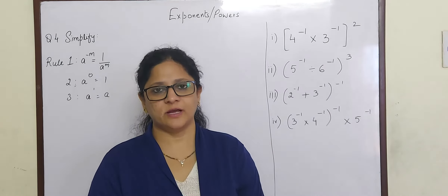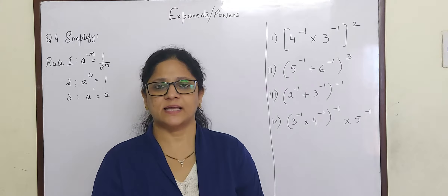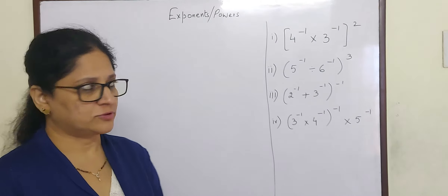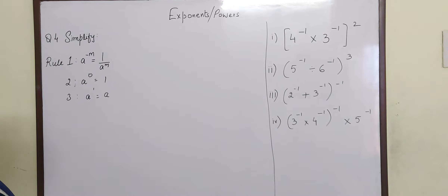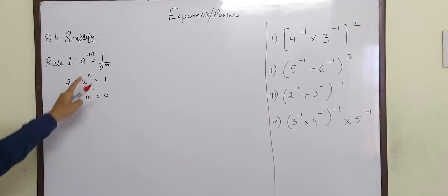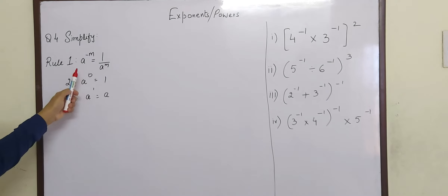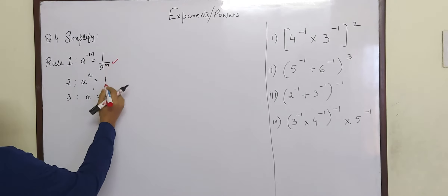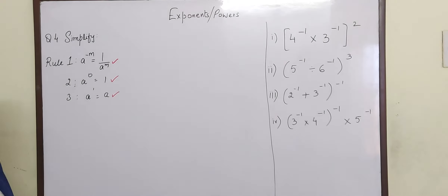Today we are going to continue Exponents and Powers, Exercise 2.1 from question number 4. As we learnt in the earlier video, these are the rules which we have to remember: A raised to minus m is equal to 1 by A raised to m; A raised to 0 equals 1; and A raised to 1 is equal to A.